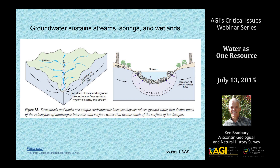Groundwater is important for streams and lakes because it often sustains them. Groundwater flows through the flow system and discharges to a surface water body. There's often a zone called the hyporheic zone right under a stream or lake where a lot of biochemical and geochemical reactions occur. It's a very active biological and chemical zone where a lot of transformations happen. There are significant chemical and biological interactions between groundwater and surface water.